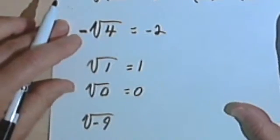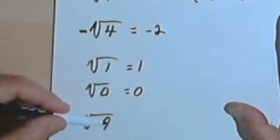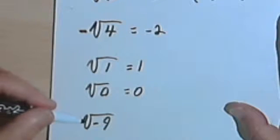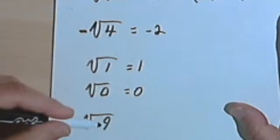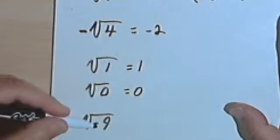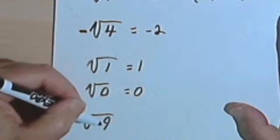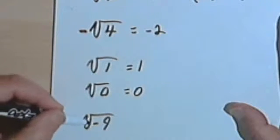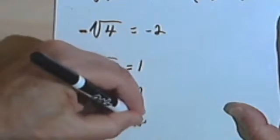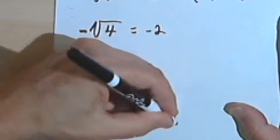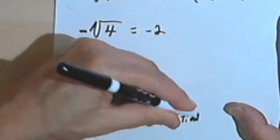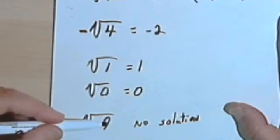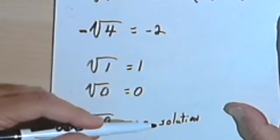Here's a tricky one. I've got the square root of negative 9. Well, I know that 3 times 3, or 3 squared, is 9. But I want a negative 9. And negative 3 times negative 3 is also positive 9. So there's really no way that I can solve this. This is going to have no solution. So in other words, anytime you have a square root of a negative number, you're not going to have an answer. It's going to be no solution.